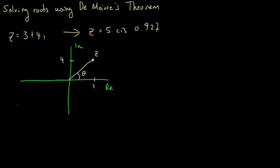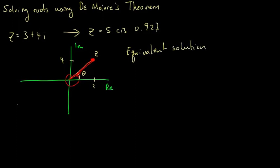Now if you can imagine that this line can rotate 2π, then I will arrive at the same position. So there are actually an infinite number of ways we can express 3 plus 4i in polar form. Our equivalent solution is we simply add 2kπ in the cis function, so: 5 cis(0.927 + 2kπ), where k is the number of rotations.